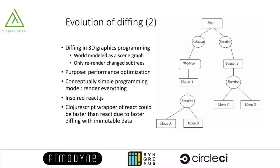Since the 1980s, additional use of diffing happened in the 3D computer graphics community. In the scene graph approach of computer graphics rendering, the world is modeled as a scene graph. The rendering engine traverses the graph to render the scene under strict time requirements — for example, it must finish rendering a frame within 30 milliseconds. One performance optimization used is to only render the changed subgraphs in the scene graph, so this requires diffing the scene graph of the current frame with that of the previous frame. The benefit is a conceptually simple programming model: programmers can pretend that everything is re-rendered in every frame.